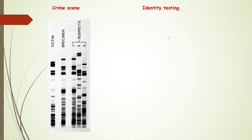Another application of DNA fingerprinting is identity testing. Child 1, child 2, and child 3 show a similar DNA band pattern with adult 1 and adult 3. This suggests that the fingerprinting of children should be similar to that of their parents. This technique gives a better understanding of which individuals are the parents of specific children.